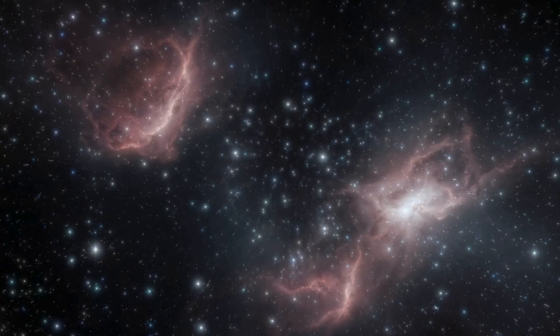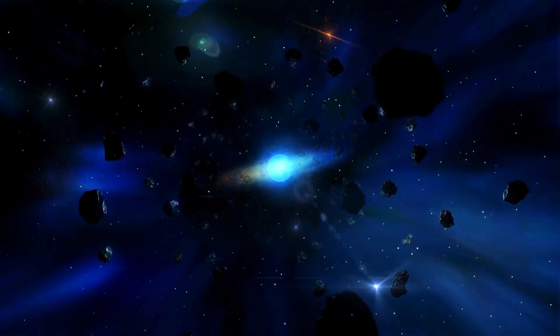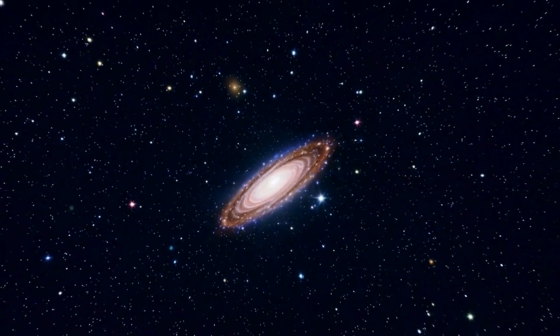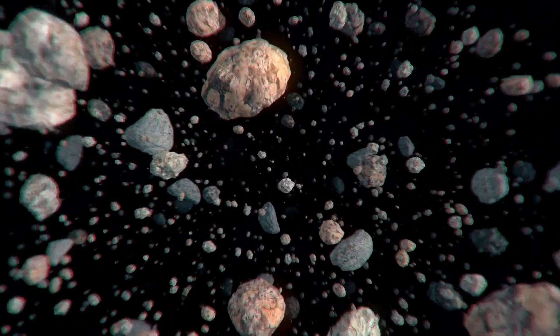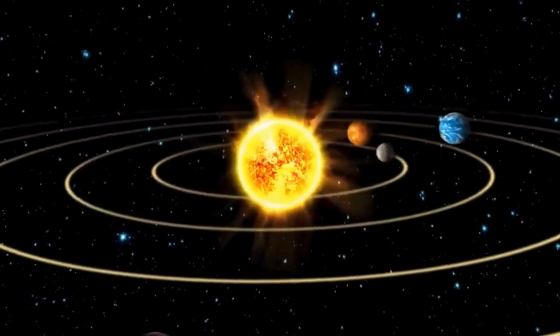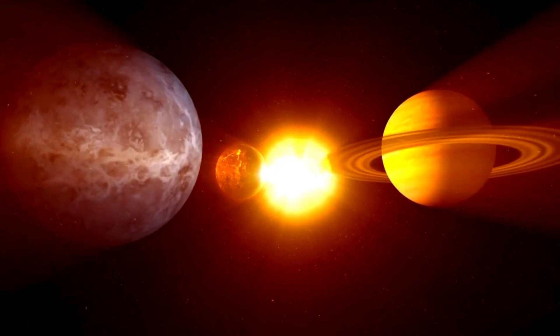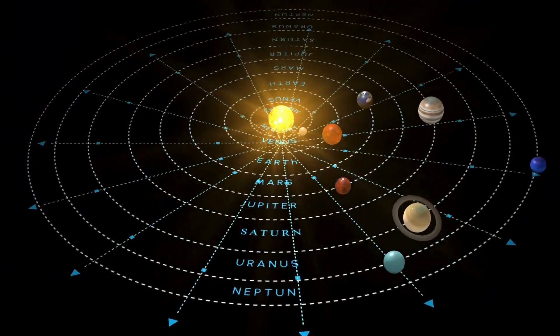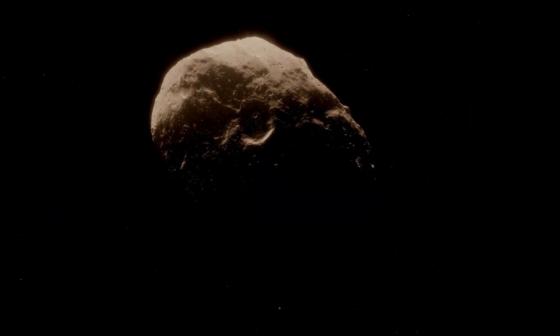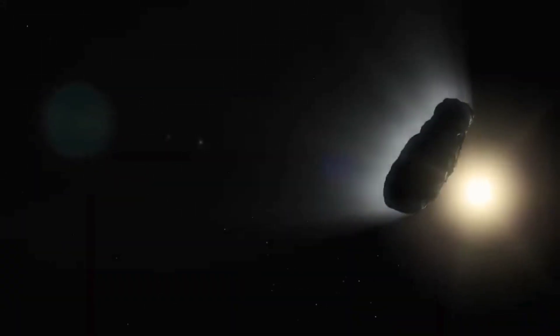This isn't just a quirk, it's a clue. If these outbursts grow stronger, they could tilt 3I-Atlas off its current path, sending it veering toward new destinations. And one of those destinations, however unlikely, could be Earth. Right now, it's projected to pass us at a safe 167 million miles in December, nearly twice the distance from Earth to the Sun. But at these speeds, a slight shift could shrink that gap dramatically. Astronomers aren't sounding alarms yet, but their models are running non-stop, calculating every possible scenario. What if the outgassing lasts longer? What if a solar wind gust catches it just right? The numbers are cold, but the implications are chilling.